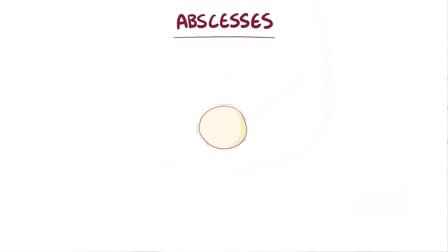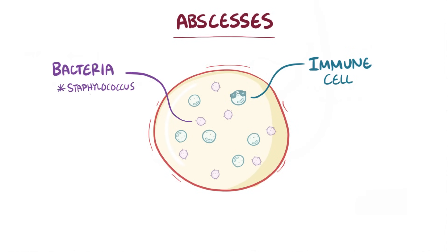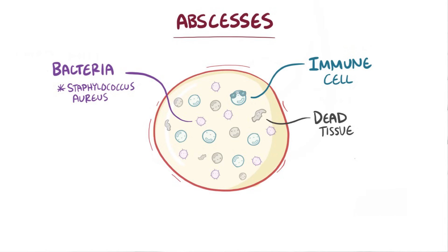Alright, as a quick recap: abscesses are a mix of immune cells, pathogens like the bacteria Staphylococcus aureus, and dead tissue. Because there's no blood supply to the middle of an abscess to deliver antibiotics, it usually needs to be cut open so that the pus can drain out.